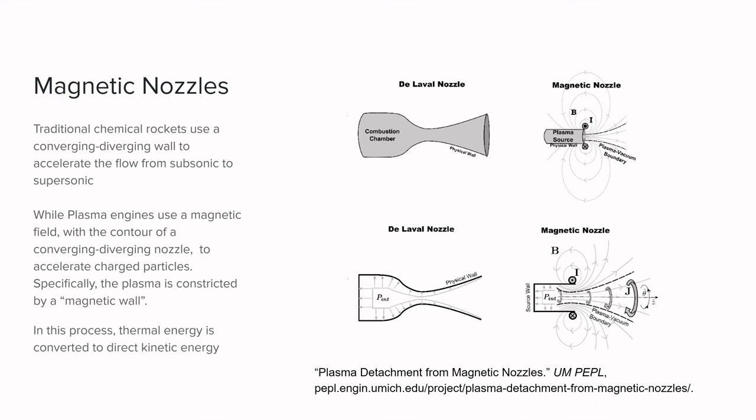And the main difference between these two nozzles is a physical wall. While the plasma engine uses a magnetic field with the contour of a converging-diverging nozzle,